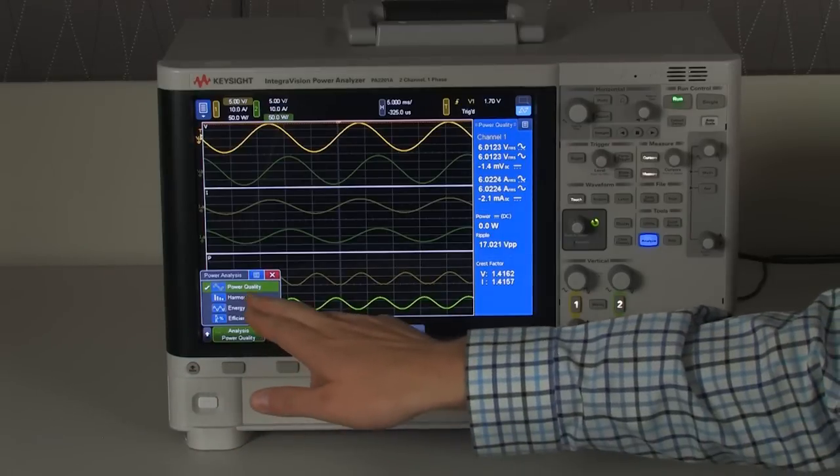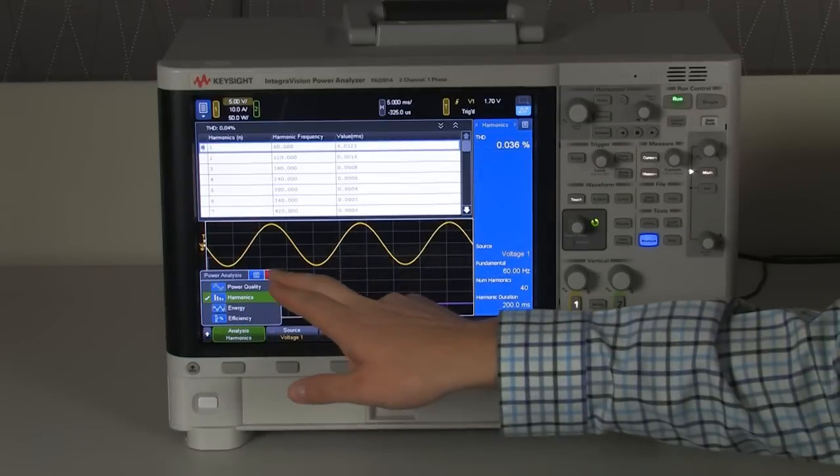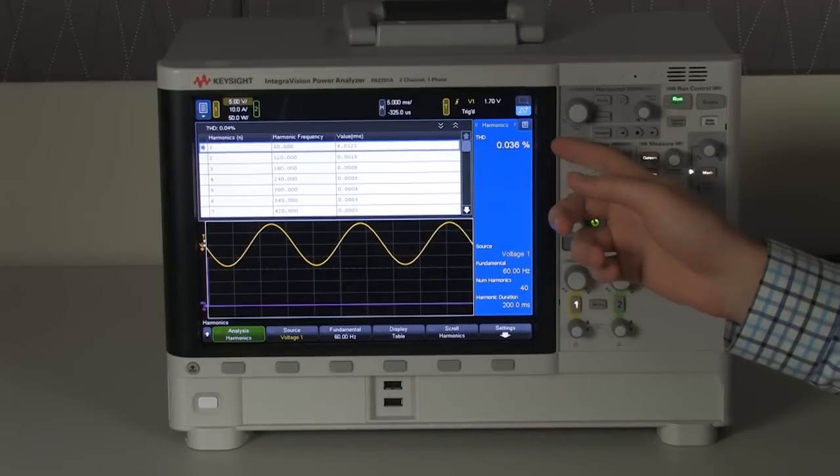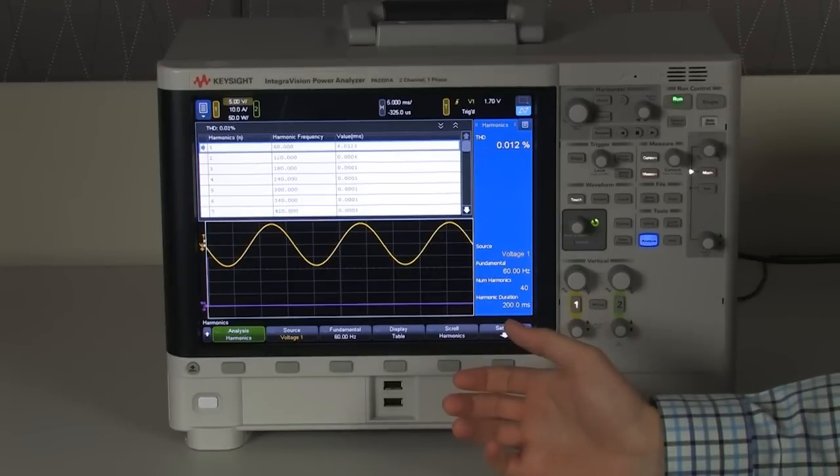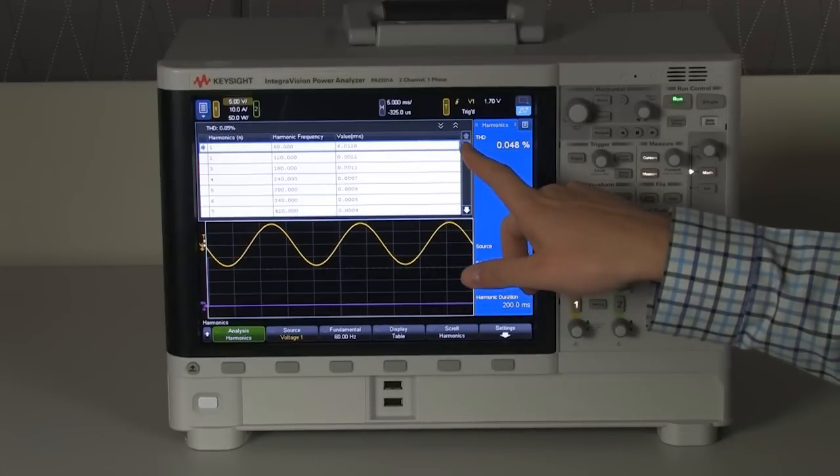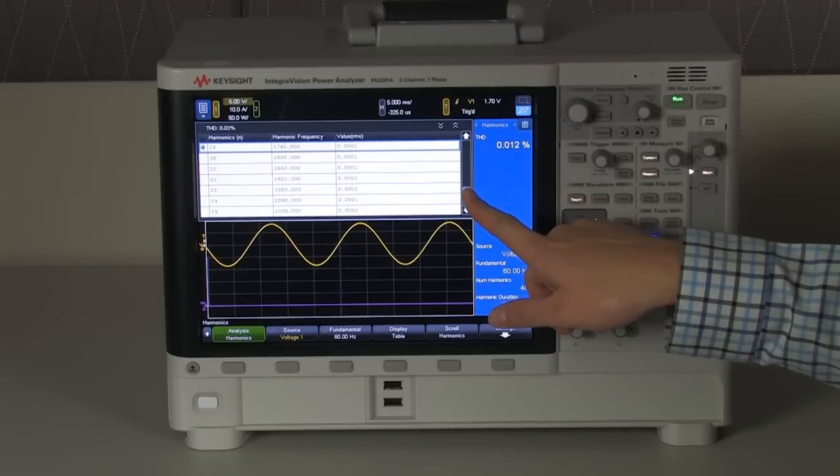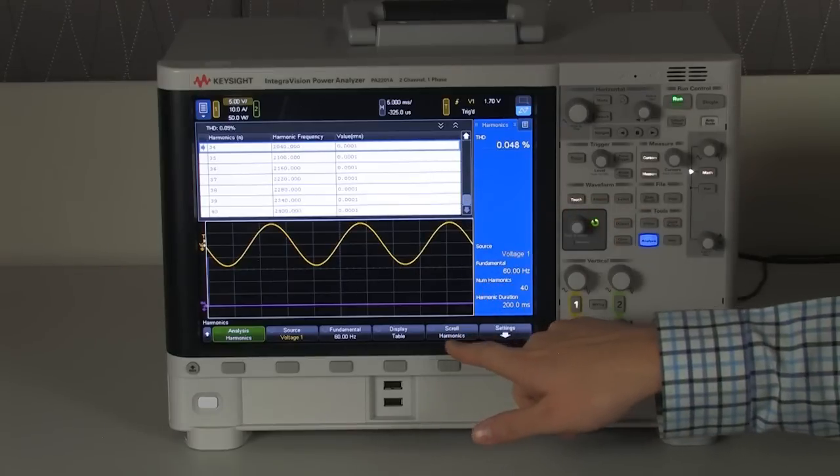Our next major mode is harmonics. In harmonics mode, we can measure the THD of our signal in real-time. Plus, at 60 Hz frequency, we can see the individual powers of the first 200 up to the first 250 harmonics.